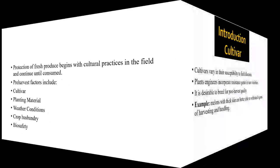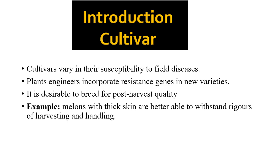Cultivar. A plant variety that has been produced in cultivation by selective breeding. A cultivar is a type of plant that people have bred for desired traits, which are reproduced in each new generation by methods such as grafting, tissue culture, or carefully controlled seed production.